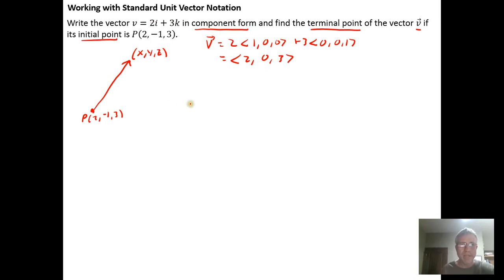But what we do know is that the vector v was constructed by using its terminal point and its initial point. So v was found by taking x minus 2, taking y minus negative 1, and taking z minus 3. And after they did the subtraction we wound up with the vector (2, 0, 3).